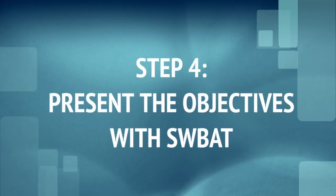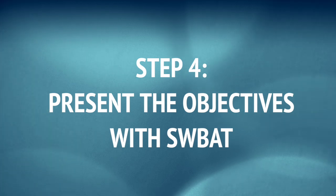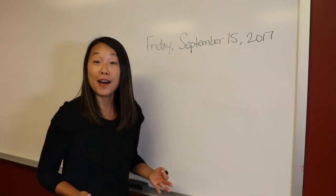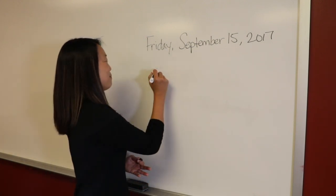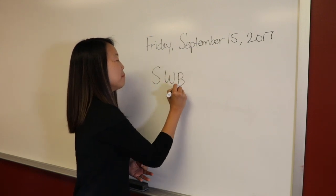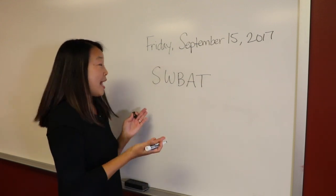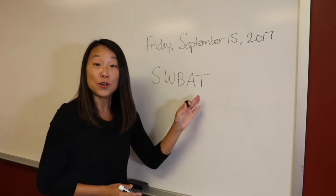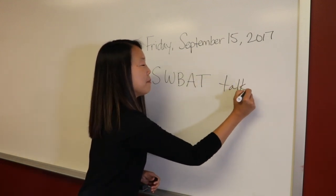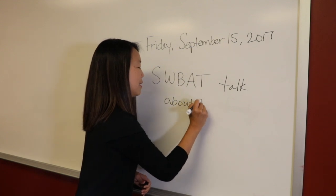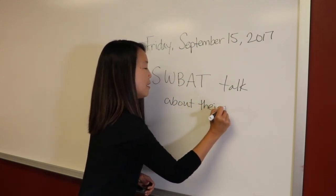Step 4: present the objectives with SWABOT. Before you start the lesson, be sure you tell students what the class objective is. For young learners, you may have just one objective for the day. Make sure you start with SWABOT, which stands for 'students will be able to.' For example: by the end of class, students will be able to talk about their family.